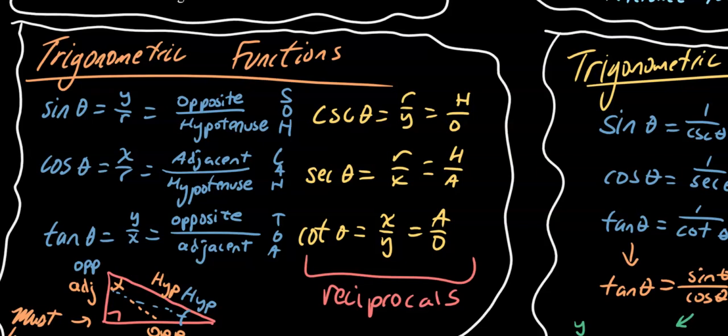Since sine theta is defined as y over r, cos theta is x over r, and tan theta is y over x, they can also be called opposite over hypotenuse, adjacent over hypotenuse, and opposite over adjacent, respectively. This can be memorized as SOH CAH TOA. The reciprocals are the exact same thing but reciprocal: r over y, r over x, and x over y.